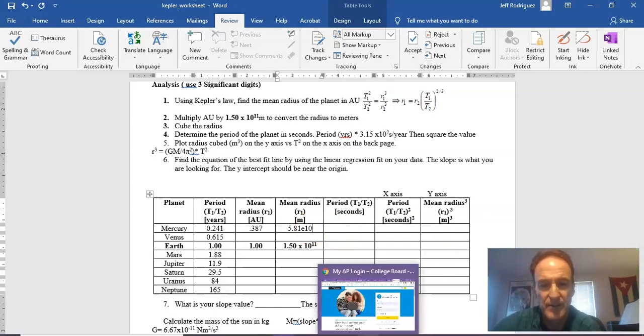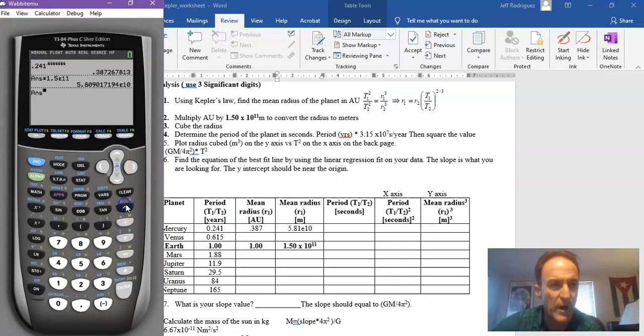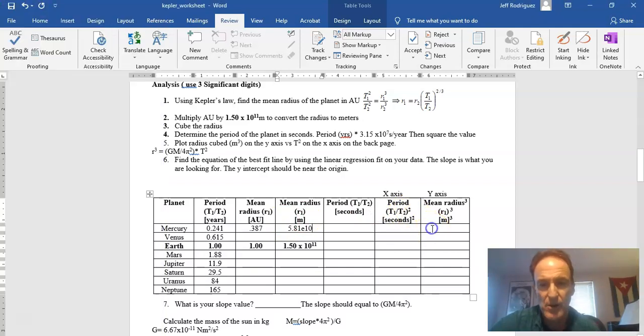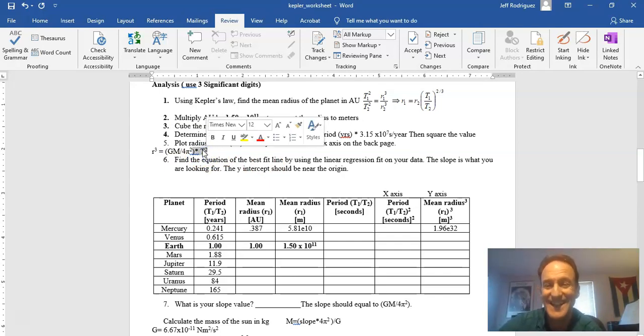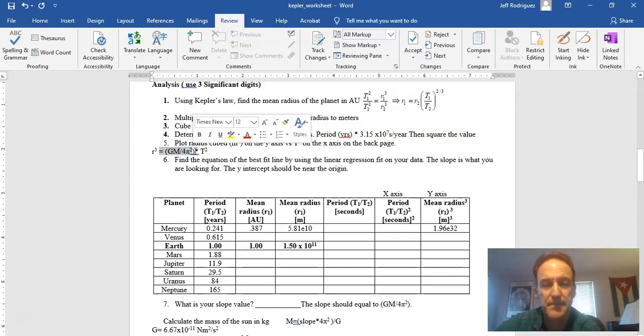And then I'm going to need to cube that value. Put this over here. Cube that value. So I'm going to go back to it. And Y of the X to the third is going to be a huge number. 1.96 to the 32 power. 1.96 EE to the 32. Now, basically what we're going to do, we're going to plot the mean radius cubed of the planet on the Y axis and the period squared of the planet on the X axis.